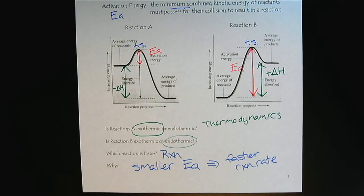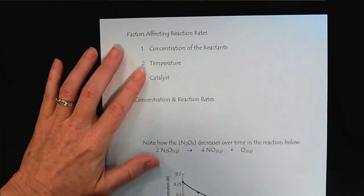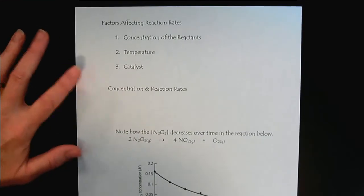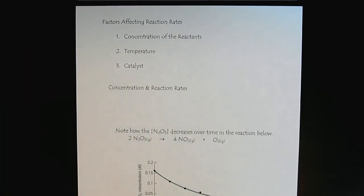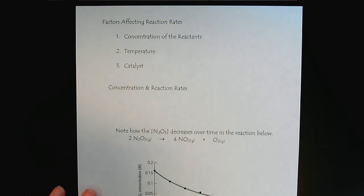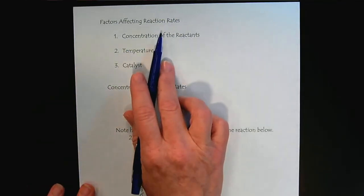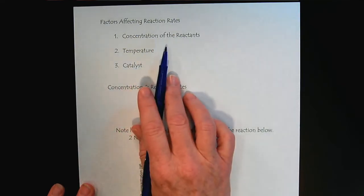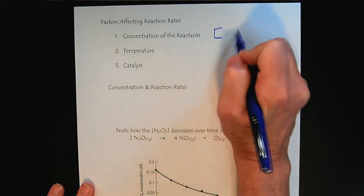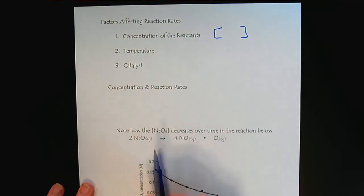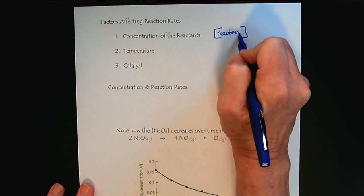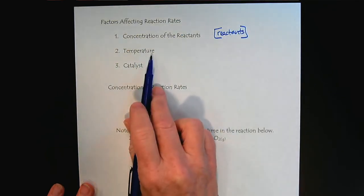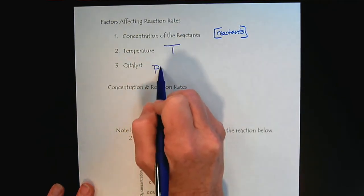Let's look at what factors affect reaction rates. There are three main considerations: the concentration of the reactants — represented by bracket notation — the temperature, or the presence of a catalyst.